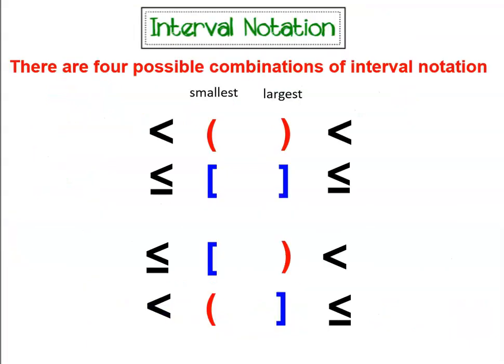These are the four combinations you can have. You can have two parentheses. You can have two brackets. Or you can have one on each side different. Now remember, when you write your interval notation, the smallest value always goes on the left-hand side, and the largest value always goes on the right-hand side, and you separate the two values with a comma in the middle.